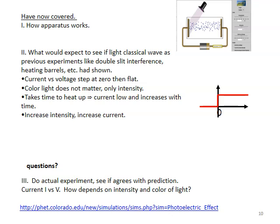All right. So, what have we done so far? We've covered how the apparatus works. What would be expected if light is a classical wave, as previous experiments have taught us, like the double-slit experiment. What we think should happen is the current versus voltage graph should be a step, it's flat. The color of the light should not matter, only the intensity. It should take some time to heat up. So, current is low at first and increases with time. And increasing the intensity should increase the current. That's what we believe.